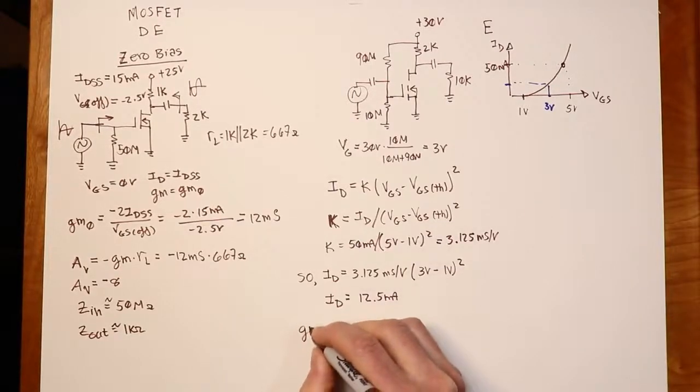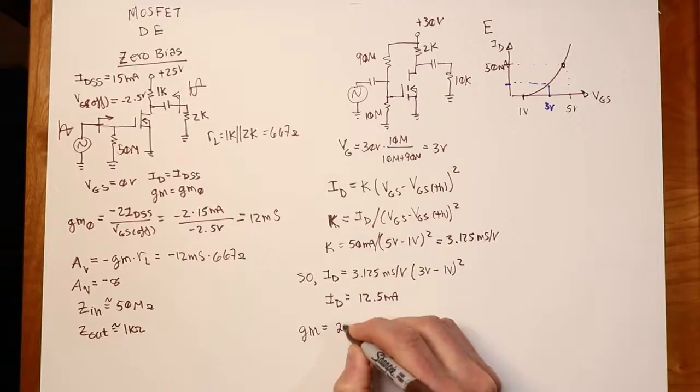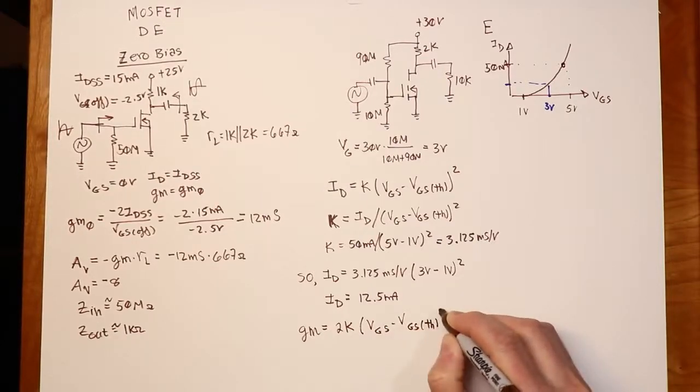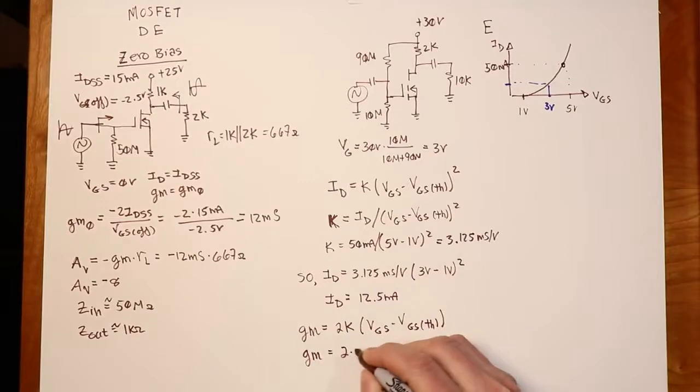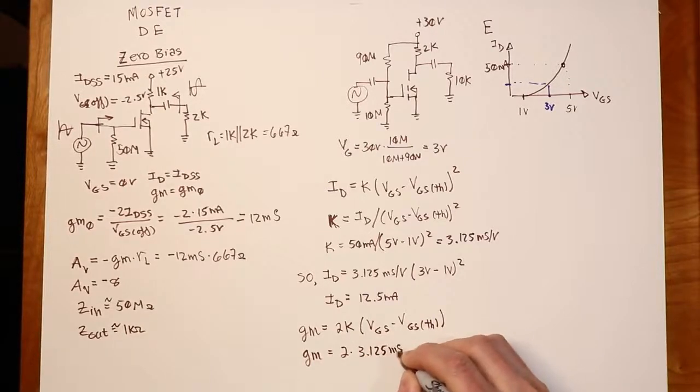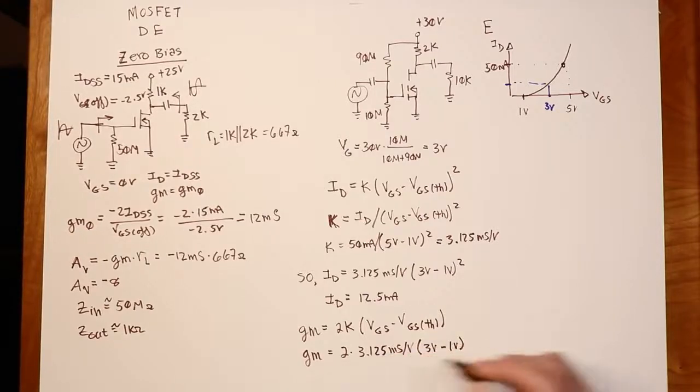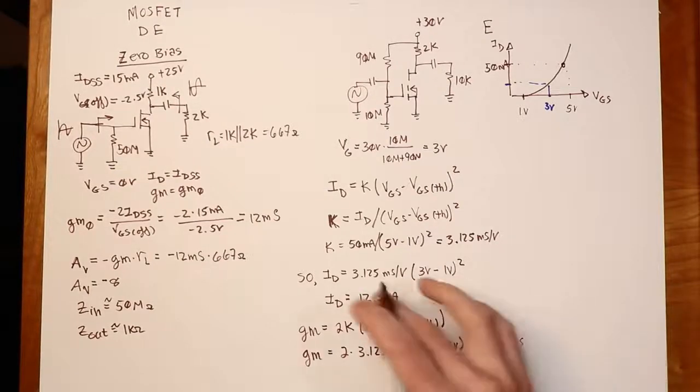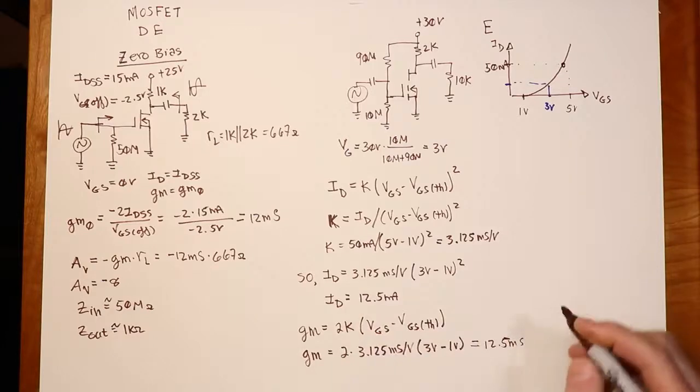Now I need to find the GM value. And we discovered last time that if we just took the derivative of this, we could find GM, which turns out to 2K times VGS minus the VGS threshold. So I'll just plug my values in here and see what we got. So K is 3.125 millisiemens per volt. And we have a VGS over here of 3 volts, a threshold of 1 volt, and our GM will work out to 12.5 millisiemens. Now, it's just a coincidence that we have the same digits here that we have here. Don't let that turn into some kind of fake importance. That's just a coincidence. All right. So I know the GM now.